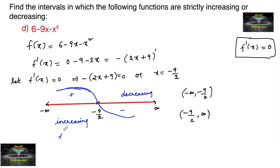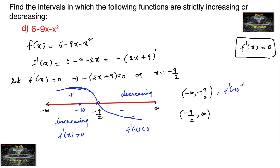Since we know that f'(x) is positive on the left and f'(x) is negative on the right, let us confirm by taking a particular value. In the interval minus infinity to -9/2, note that -9/2 = -4.5. Let me take x = -10. f'(-10) = minus of (2 × (-10) + 9) = minus of (-20 + 9) = minus of (-11) = +11, which is greater than 0. So it is positive.